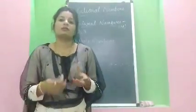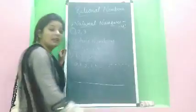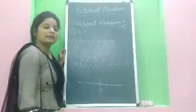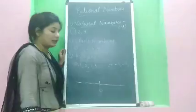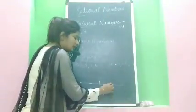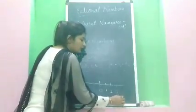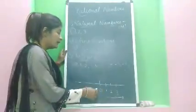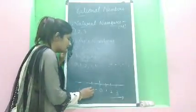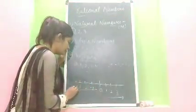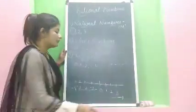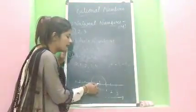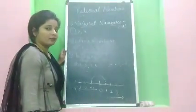How do we represent integers on a number line? We draw a line and take 0 as the origin. Zero is neither a positive nor a negative integer. Moving right from 0 gives positive integers: 1, 2, 3. Moving left from 0 gives negative integers. Every positive integer has a corresponding negative integer at the same distance from 0 on the left.